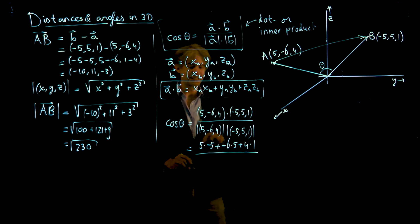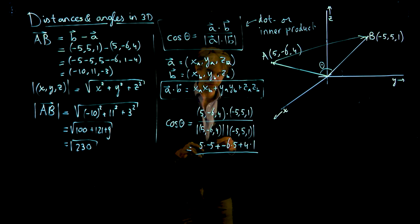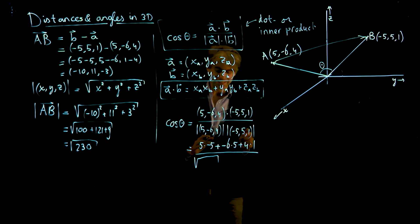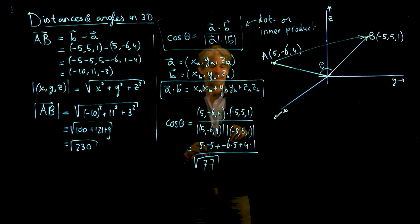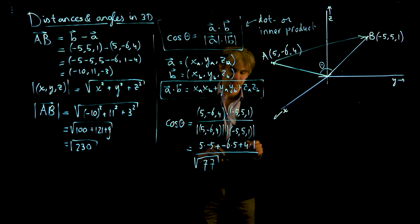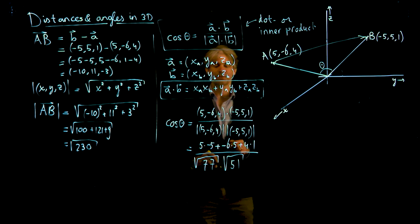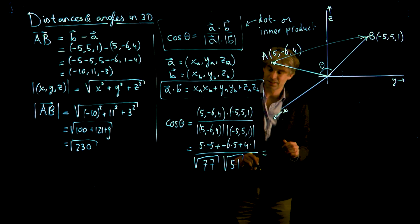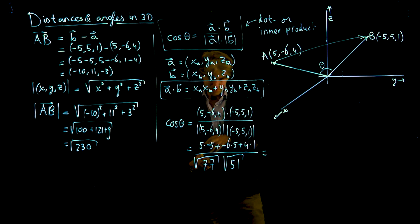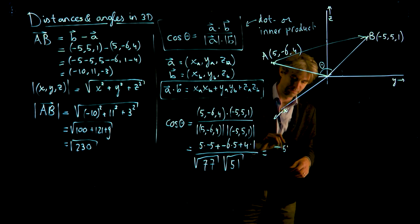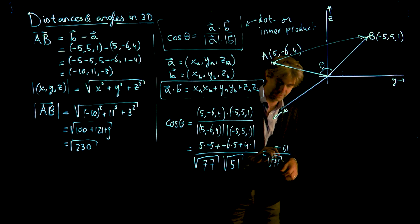Then we divide by the length of these things. I have a little space on my blackboard so I'll do it in one go. This is the square root of 25 plus 36 plus 16, which is 77. And this one is slightly easier: 5 squared plus 5 squared plus 1 squared is 51. If you square, you drop the minus. So this is the square root of 51.